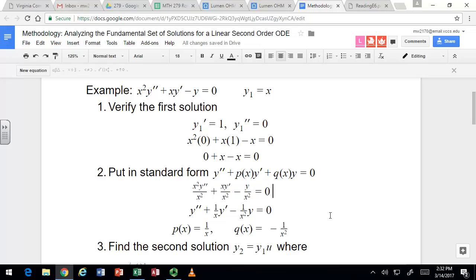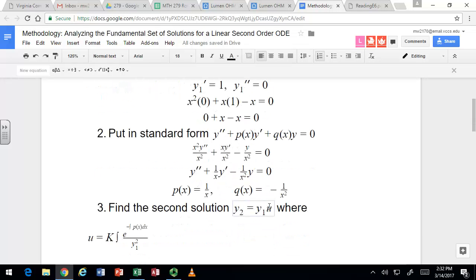So this is a way to find the second solution, where we take the first solution and think of the second solution as just multiplication by some function u. If we know what u is, we can multiply y₁ by u and get this second solution.